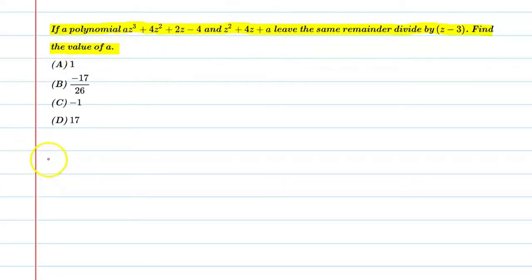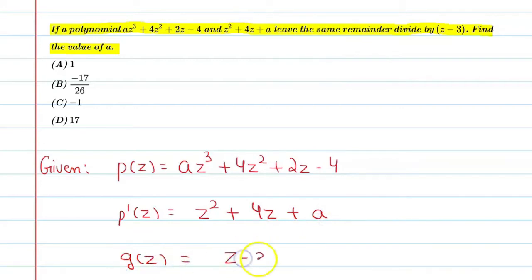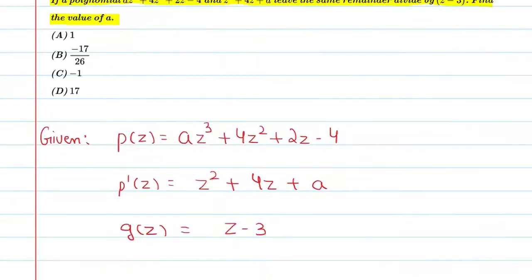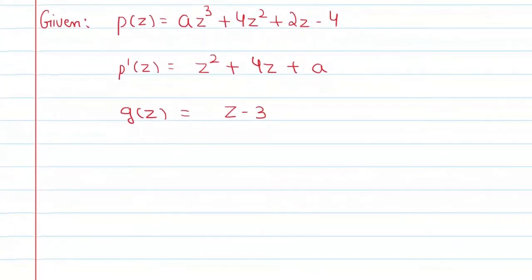Let's start this question. First of all, we will write the given. Given is first polynomial p(z) = az³ + 4z² + 2z - 4. Now the second polynomial, denoted by p'(z), is z² + 4z + a. And another one is g(z) which is equal to z - 3. Now we have said that if we divide by g(z), then the remainder is the same.